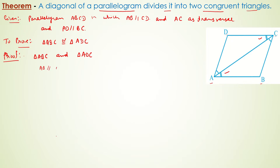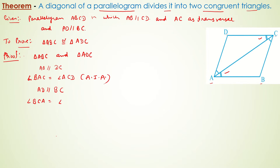Since AB is parallel to DC and AC is the transversal, angle BAC is equal to angle DCA, forming a pair of alternate interior angles. Similarly, since AD is parallel to BC and AC is again the transversal, angle DAC is equal to angle BCA, which also forms a pair of alternate interior angles.